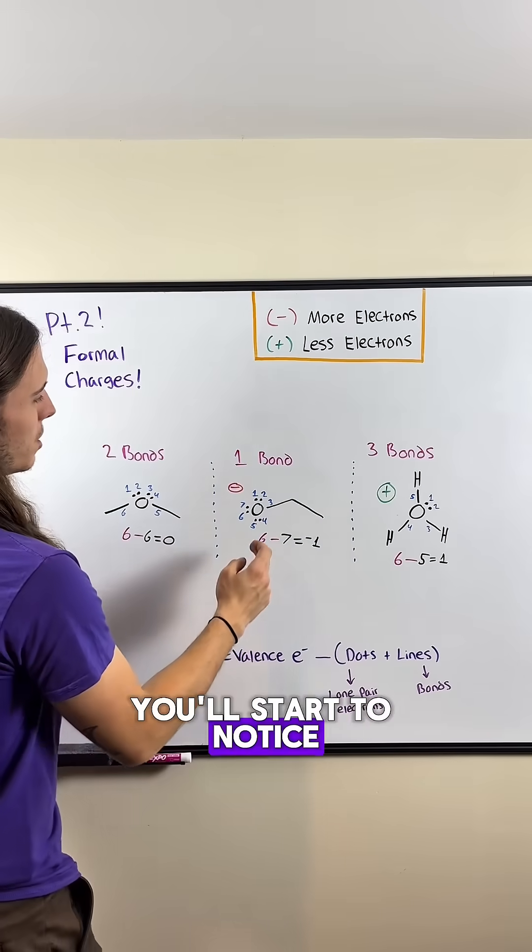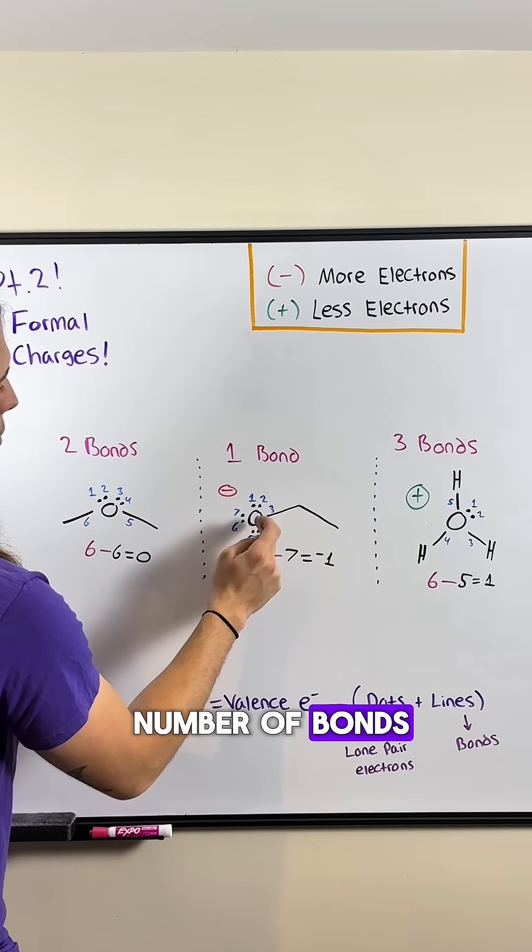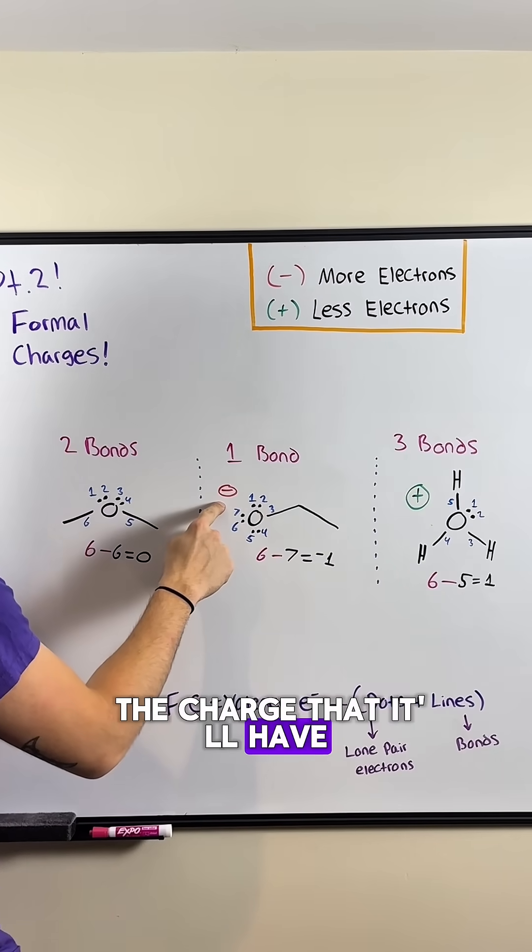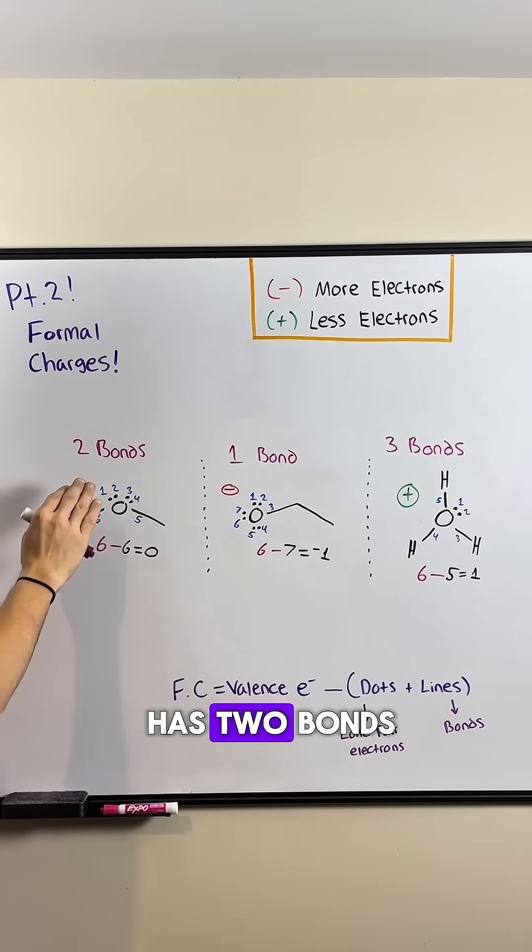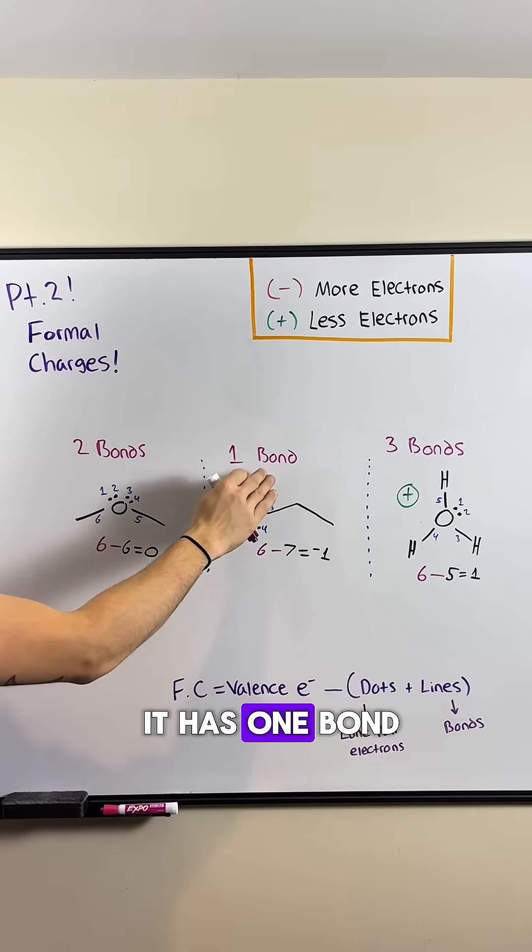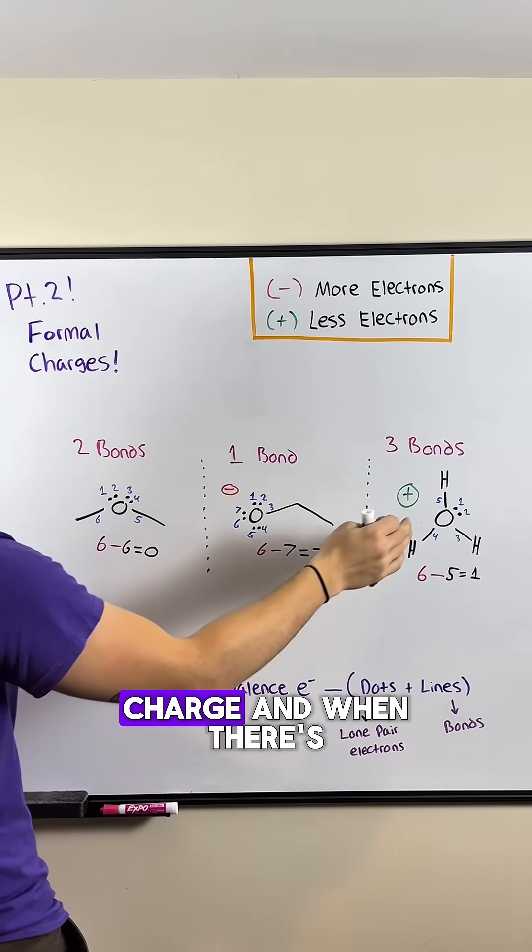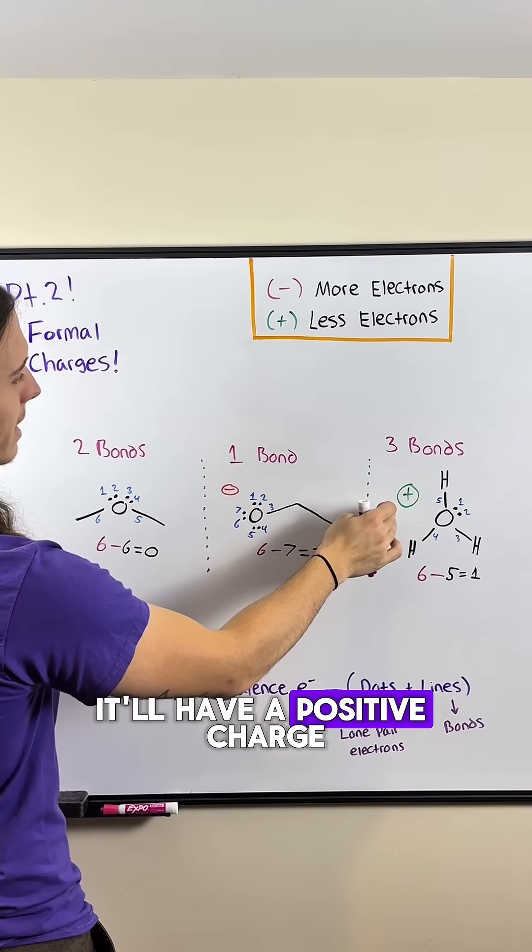As you dive deeper into OCHEM, you'll start to notice a trend between the number of bonds around an atom and the charge that it'll have. For example, when oxygen has two bonds, it is neutral. When it has one bond, it has a negative charge. And when there's three bonds, it'll have a positive charge.